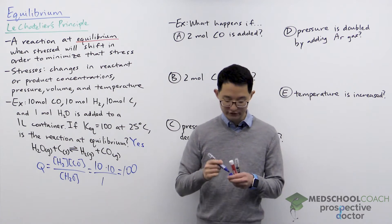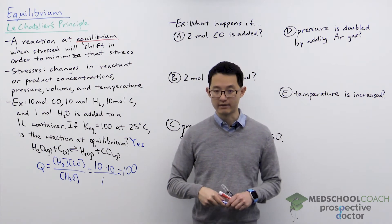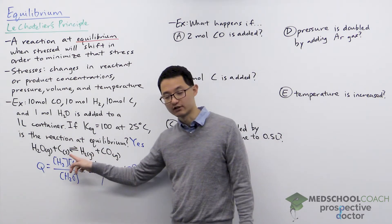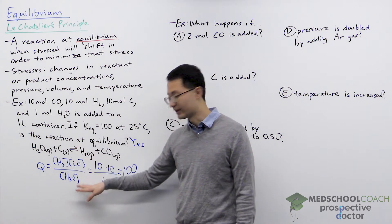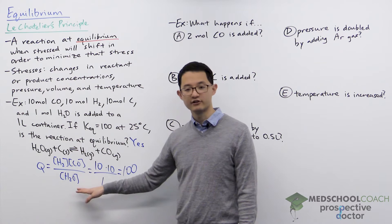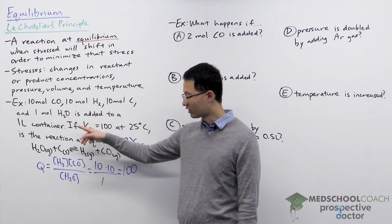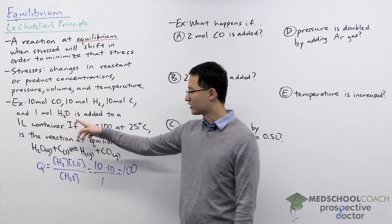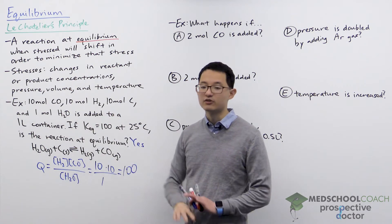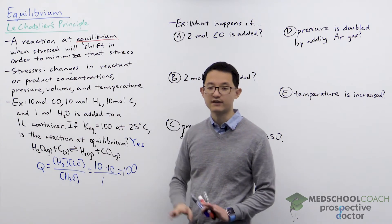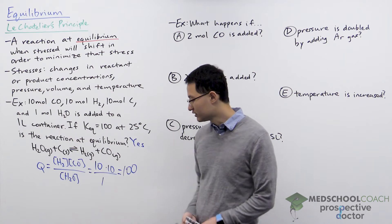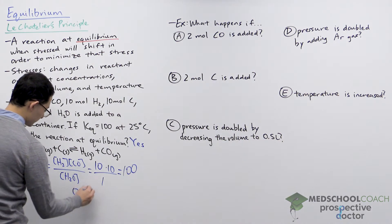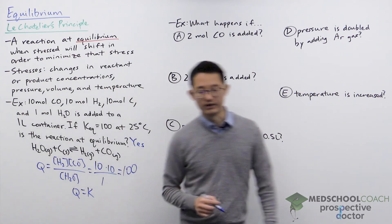Here's where you need to be a little careful for the MCAT. Some students might forget that carbon should not be included in the reaction quotient expression. If you had included carbon in the denominator and plugged in its concentration, you would have gotten a different value for Q and would not have concluded that Q equals K and that the reaction is at equilibrium.